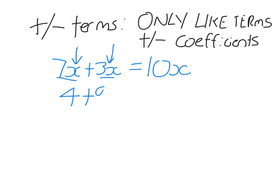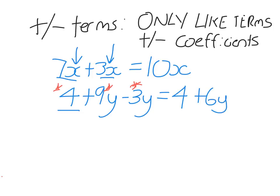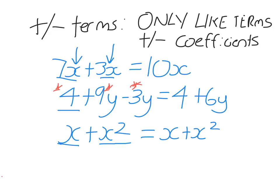If I have something like 4 plus 9Y minus 3Y: 4 is not a like term with the other two terms, because those two terms both have a Y while the first term doesn't. So we can only add or subtract the ones that are like terms. If a term doesn't have a like term, we leave it as it is. 9Y minus 3Y is 6Y — I just subtracted the coefficients. Note that X and X squared are not like terms, because X squared is X times X, it has two X's while the first doesn't. So we can't simplify that; it stays exactly as it is.